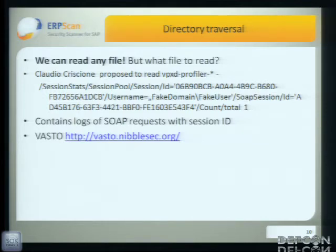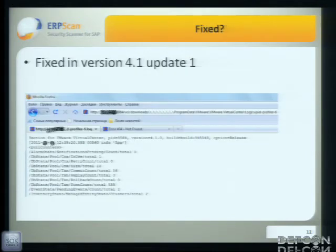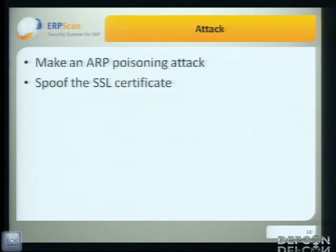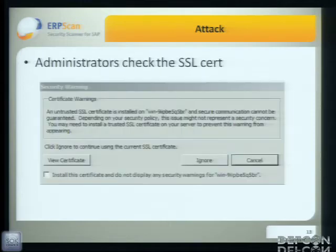Claudio also developed a tool called VASTO. It has a collection of Metasploit modules and also has a local proxy for this task. Unfortunately, it was also fixed in our version. But the log file contains IP addresses of administrators. If it contains admin IP addresses, we can try a classic attack: ARP poisoning, spoof the SSL certificate, and sniff traffic. But the administrators of this network were really clever — they added the certificate to trusted and didn't clear the warning. So that didn't work.